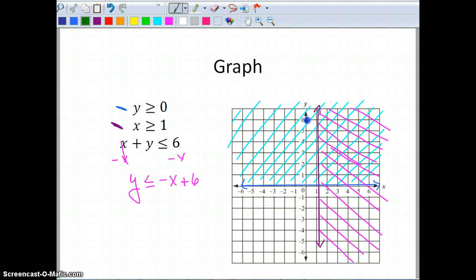My y-intercept is 6, so I go all the way up to 6 on the y-axis. My slope is negative 1, down 1 over 1. Once again, I'm going to have a solid line because it's less than or equal to. There's a lot of colors going on here. So this one I graphed in green.